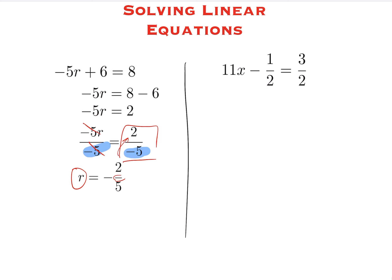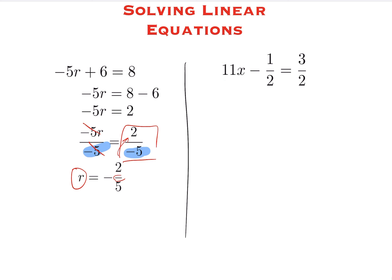For the next linear equation, we want to get rid of the 11 and the minus 1 half. Addition and subtraction operations get moved first, then operations connected to your variable happen at the end. Add 1 half to both sides: 11x equals 3 halves plus 1 half, which simplifies to 11x equals 2. Dividing across by 11 gives us x equals 2 over 11.